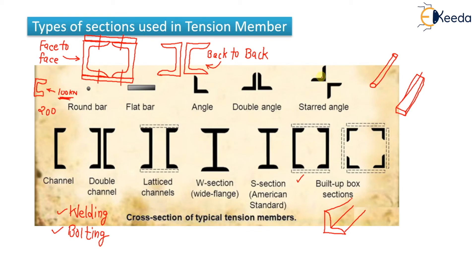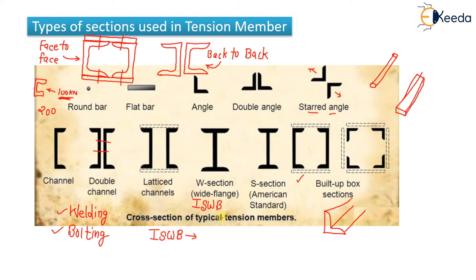Then we have double angle and starred angle — two angles are connected where one is placed one way and another is mirrored, forming a star-like arrangement. We also have simple channel section and double channel section, which can be connected by welding or bolting. There is also an arrangement of two channels connected by a plate.